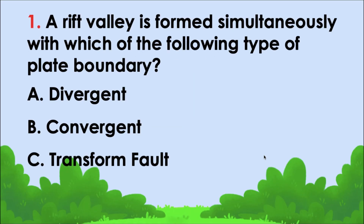A rift valley is formed simultaneously with which of the following types of plate boundary? The correct answer is letter A — divergent.